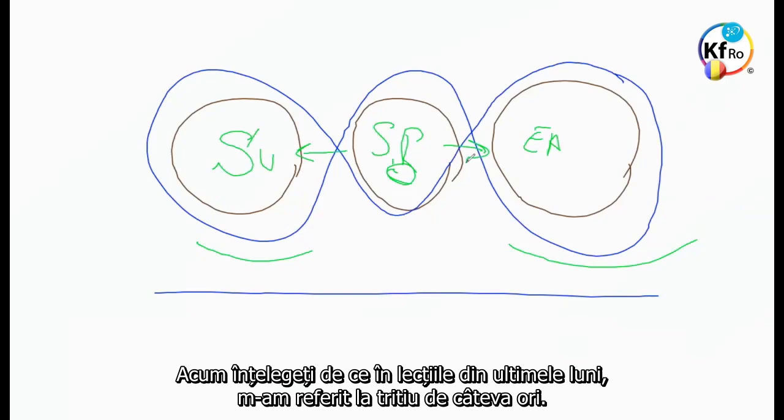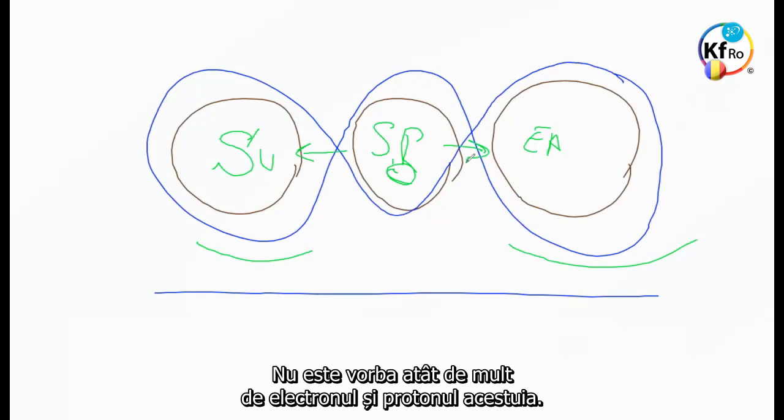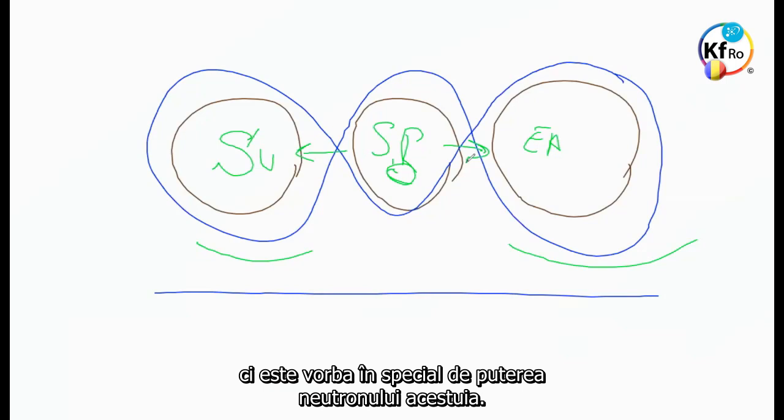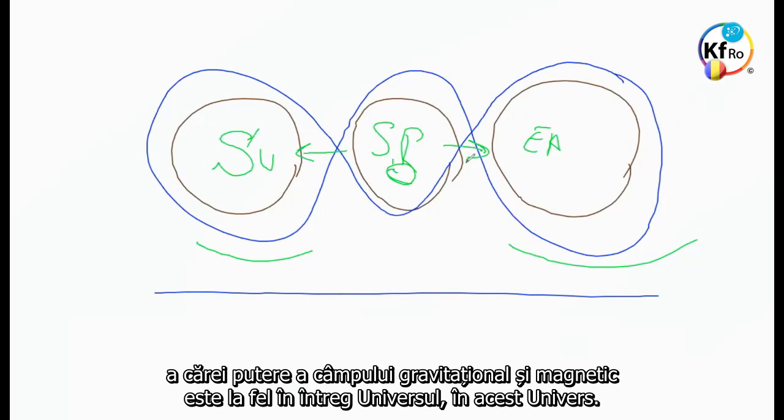Now you understand why in the teachings of past few months I referred to Tritium a few times. Why Hydrogen is the cornerstone of any system operation in the Universe. It's not so much it's Electron and it's Proton, it's so much the strength of its Neutron. And the Neutron across the Universe, this Universe, according to the condition created by a central line principle, Magnetic Gravitational Field strength is the same across the Universe, in this Universe.